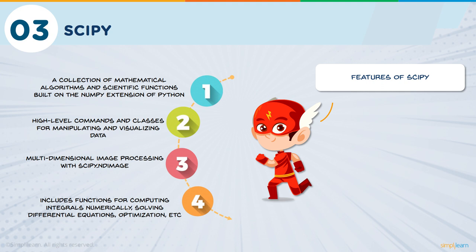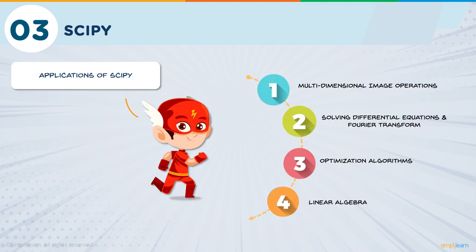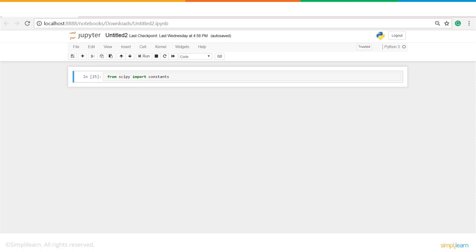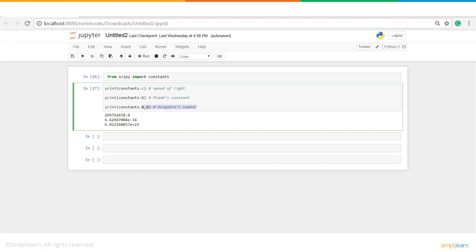SciPy is used in multi-dimensional image operations — it has functions to read images from disk into NumPy arrays, write arrays to disk as images, resize images, etc. Other applications include solving differential equations, Fourier transforms, optimization algorithms, and linear algebra. Here I'm importing the constants package of the SciPy library, which has all the constants. By mentioning C, H, or NA, this library already knows what to fetch — like speed of light, Planck's constant, etc. These can be used in further calculations.